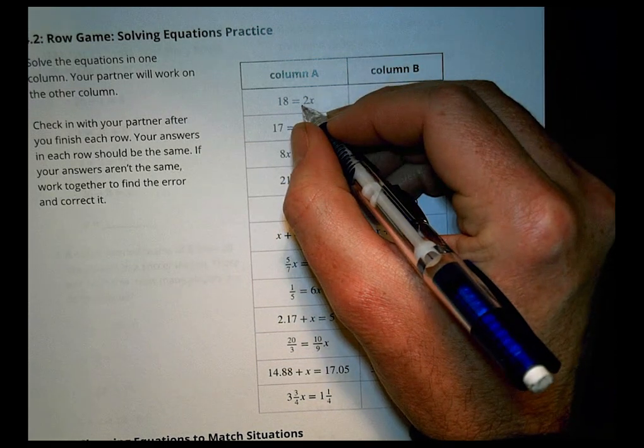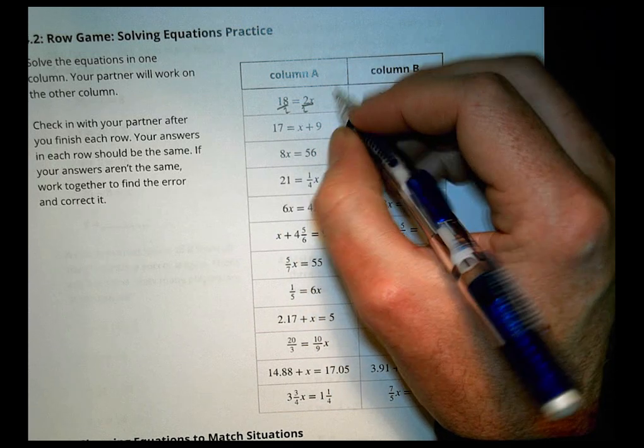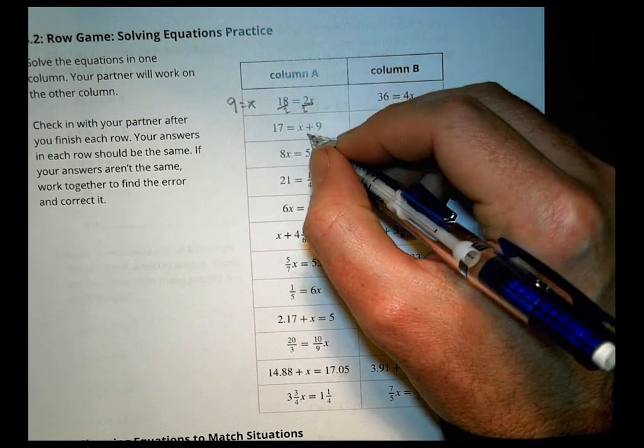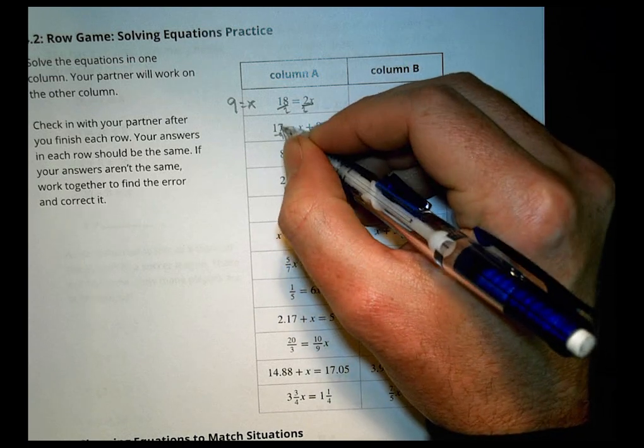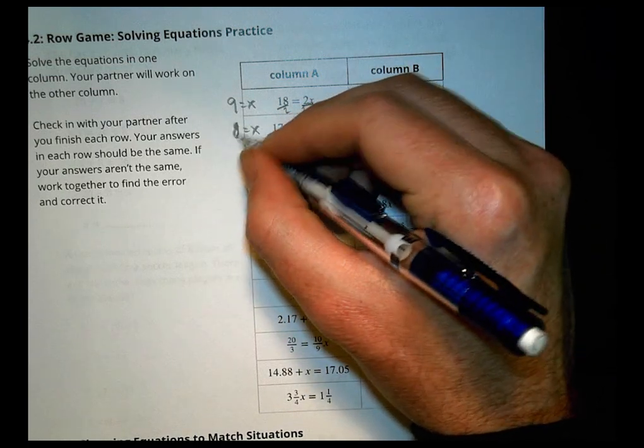So for A, first of all, I'm going to divide both sides by 2. 18 divided by 2 is 9, so x equals 9. On this one, I'm going to subtract 9 from both sides. 17 minus 9 is 8, so x equals 8 for that one.